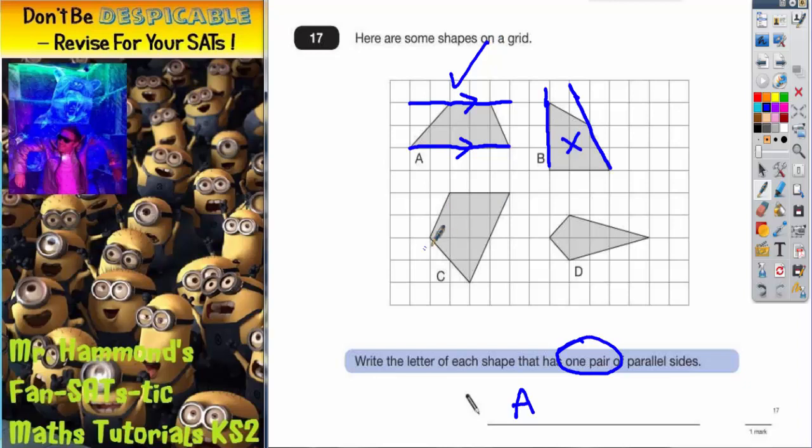Shape C is another trapezium. This time it's been rotated. So the parallel sides are actually these slanted sides here, because they are the same distance apart all the way along. And if you extended them, you would get exactly the same thing. So these two points are three squares apart all the way along. They're the same distance all the way along. So C does have parallel lines, so we can mention it.